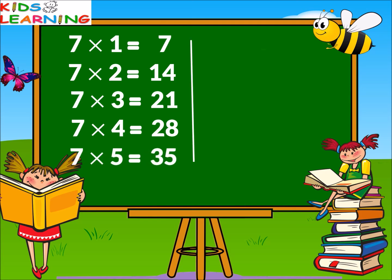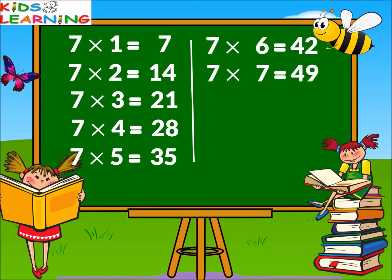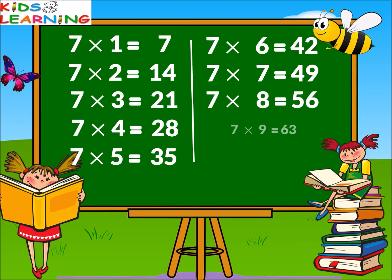7 sixes are 42. 7 sevens are 49. 7 eights are 56. 7 nines are 63. 7 tens are 70.